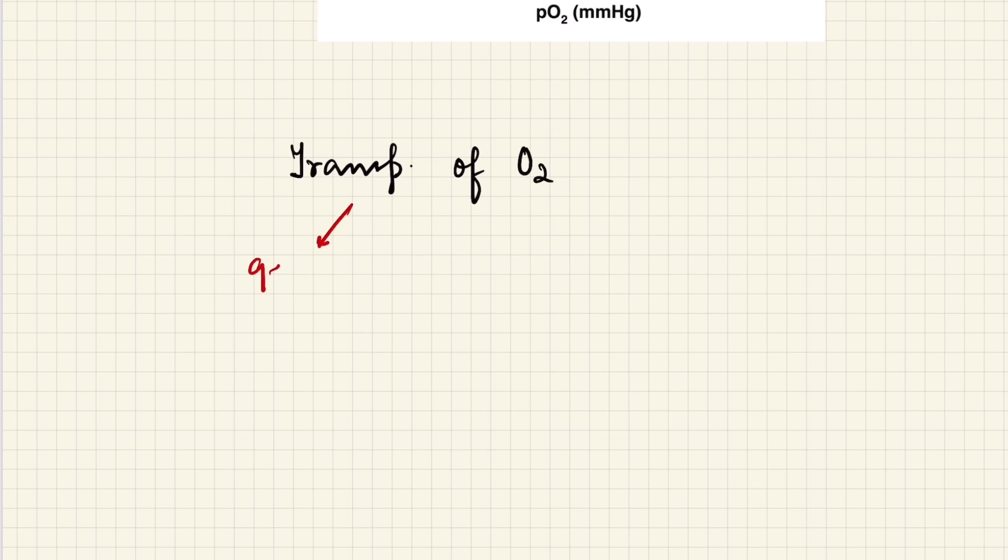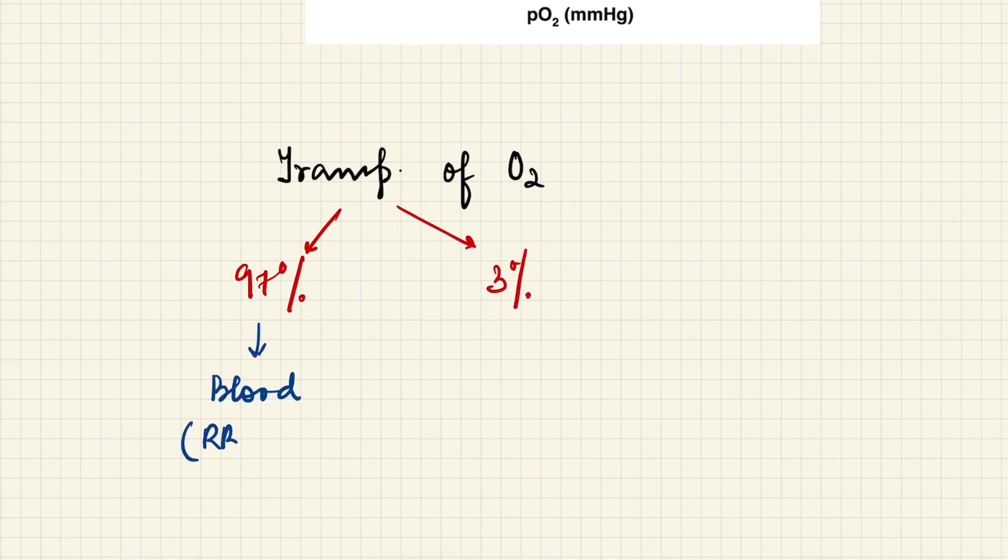97% of oxygen is carried through RBCs which contain hemoglobin, which binds to the oxygen and transports it. The remaining 3% is transported in a dissolved form in plasma.